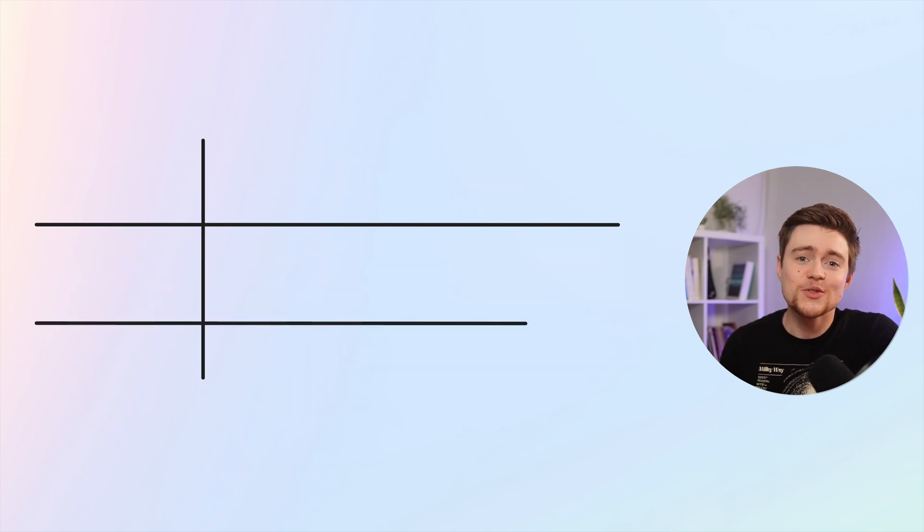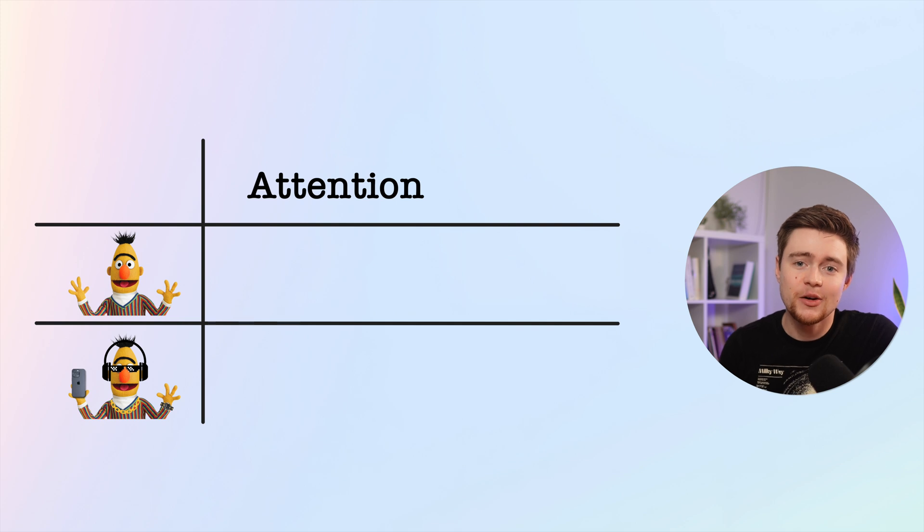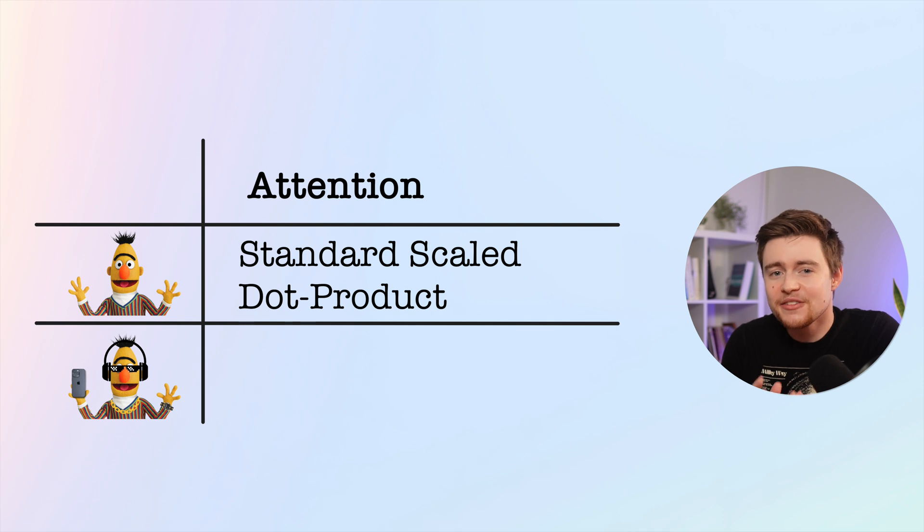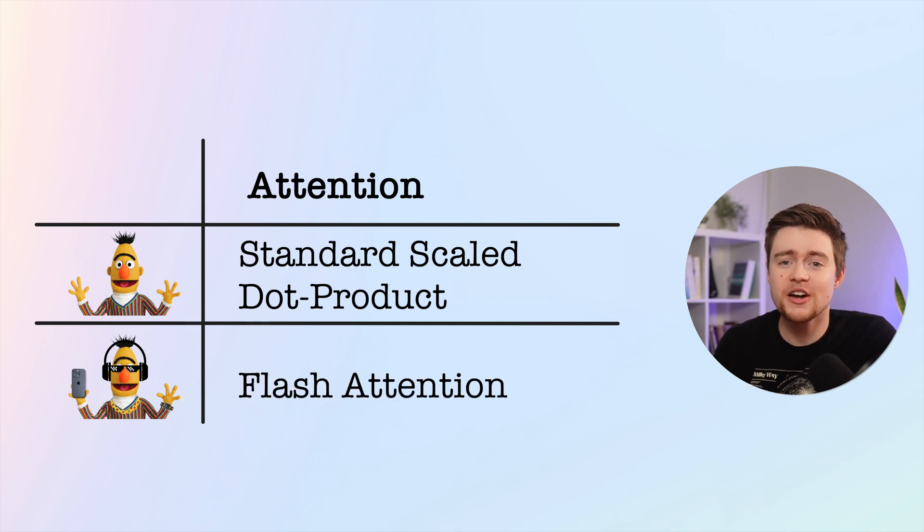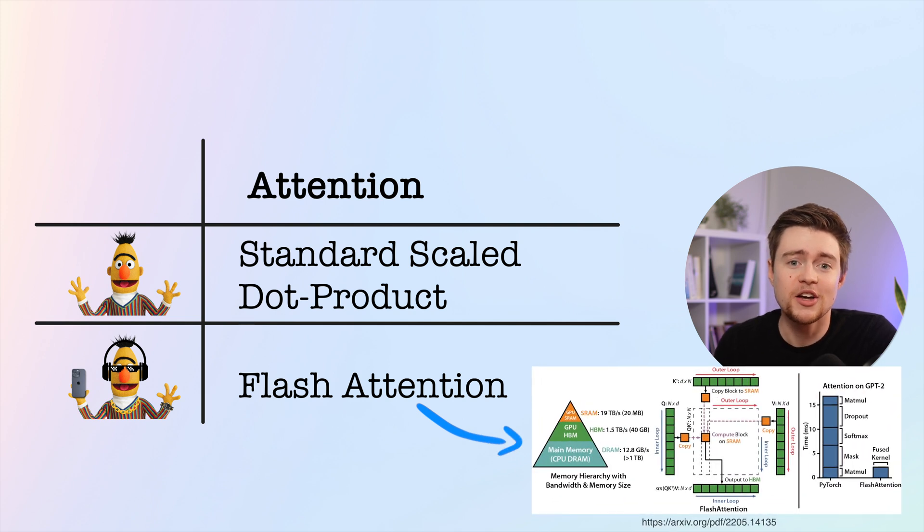Modern BERT also upgrades the attention mechanism, which is the core component of transformers. The original attention mechanism in BERT is quite inefficient because it grows quadratically with the sequence length in compute and memory. This makes it very impractical if you want to use it to process long sequences. But Modern BERT uses flash attention, which is very common in modern LLMs now. Flash attention is basically a GPU-optimized implementation of the attention mechanism that makes it much more memory efficient and also much faster.